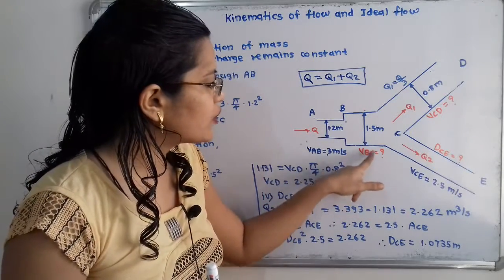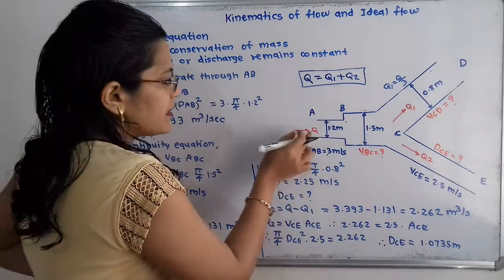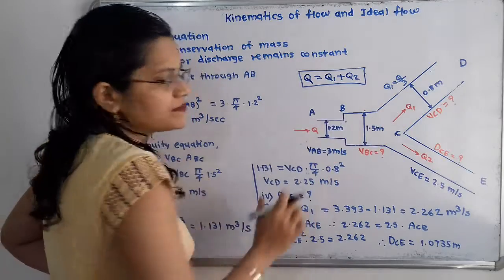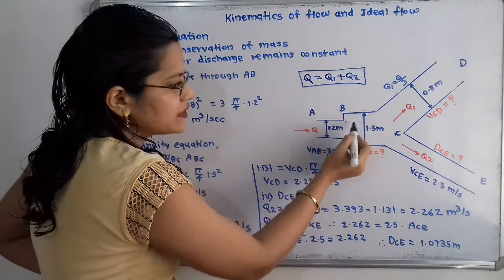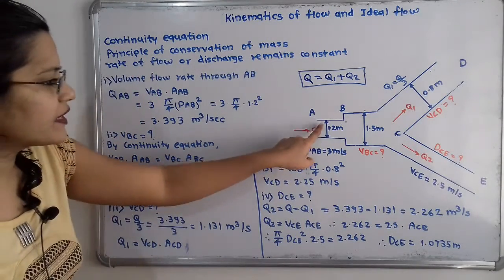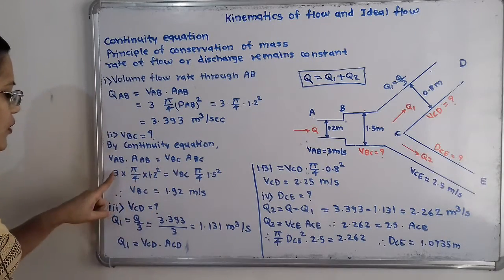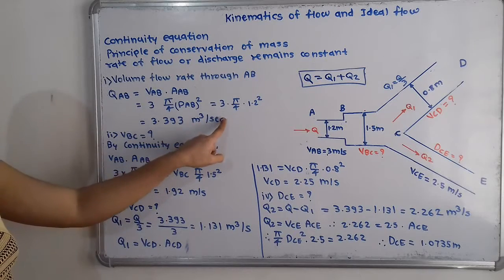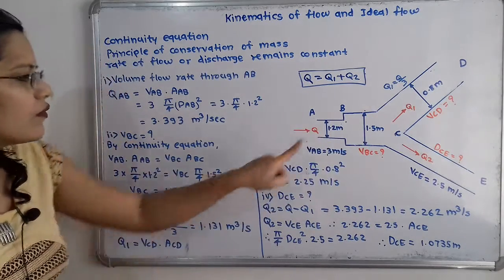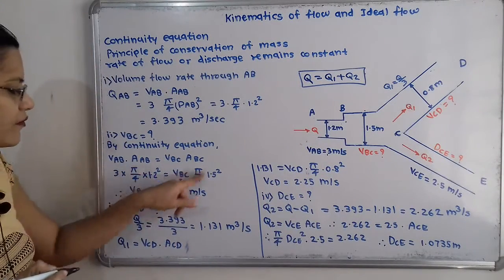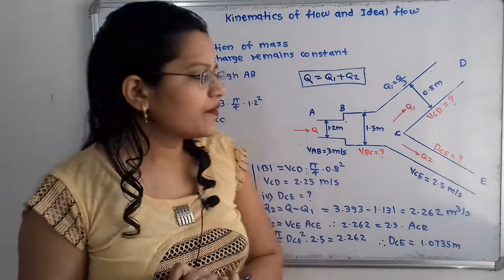Next we find the velocity at section BC using the continuity equation, since mass flow rate remains the same through sections AB and BC. So V_AB times A_AB equals V_BC times A_BC. Substituting: 3 times (pi/4 times 1.2 squared) equals V_BC times (pi/4 times 1.5 squared). Pi by 4 cancels from both sides, giving V_BC equals 1.92 meter per second.